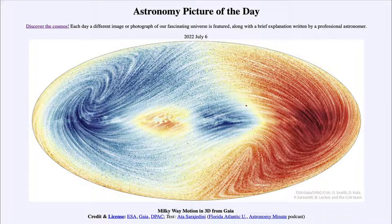So that was our picture of the day for July 6th of 2022. It was titled Milky Way Motion in 3D from Gaia.